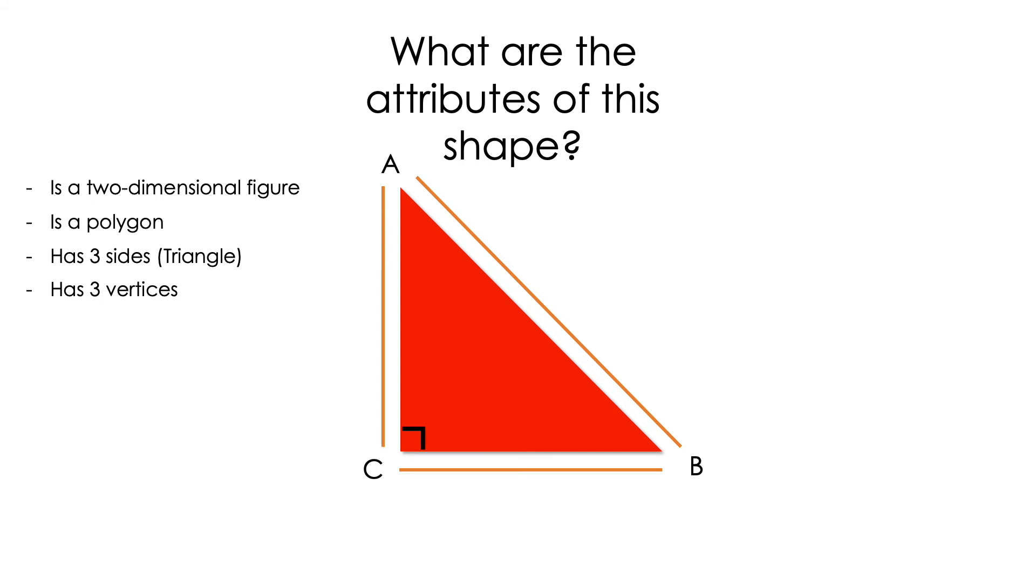We're going to be talking about the angles. It has three angles. Two of the angles, A and B, are congruent. And, one pair of perpendicular sides. That means AC is perpendicular with CB.